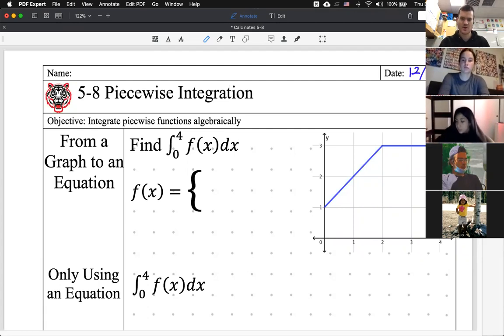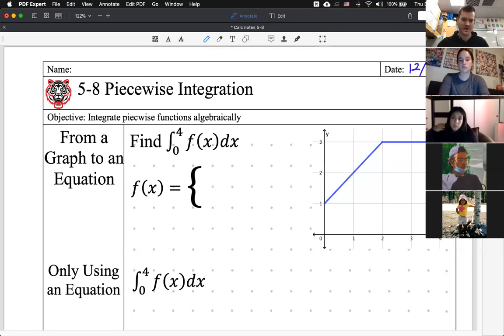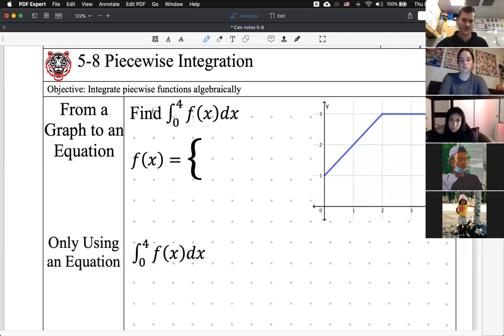So yesterday, 5-7, all you had was a graph of piecewise equations. You had to figure out triangle, rectangle, triangle, rectangle. You did it that way. Now I'm taking away the graph. You just get the equation. How do you do that?